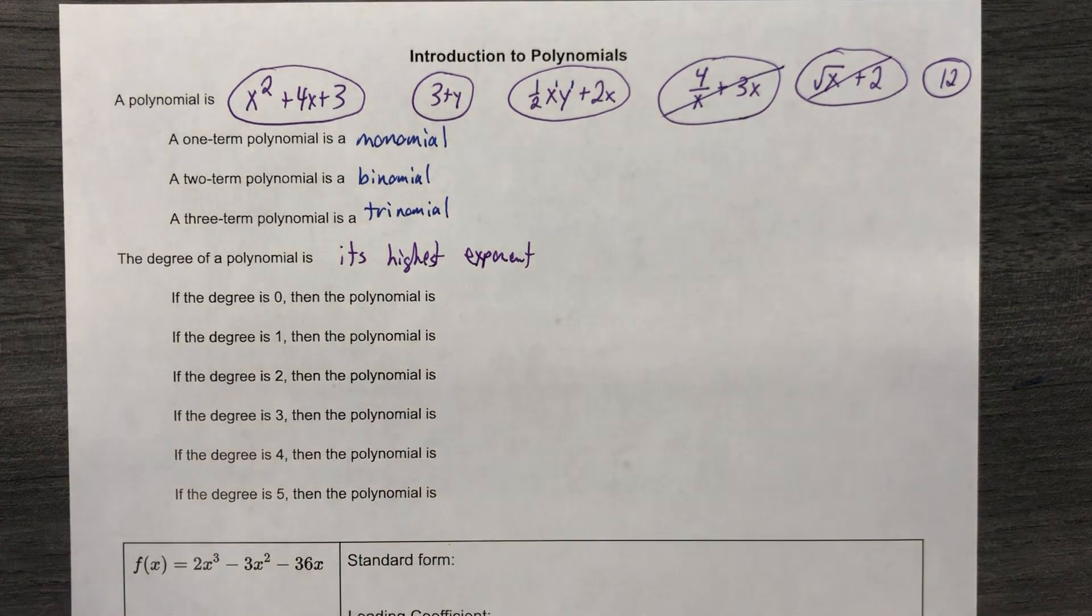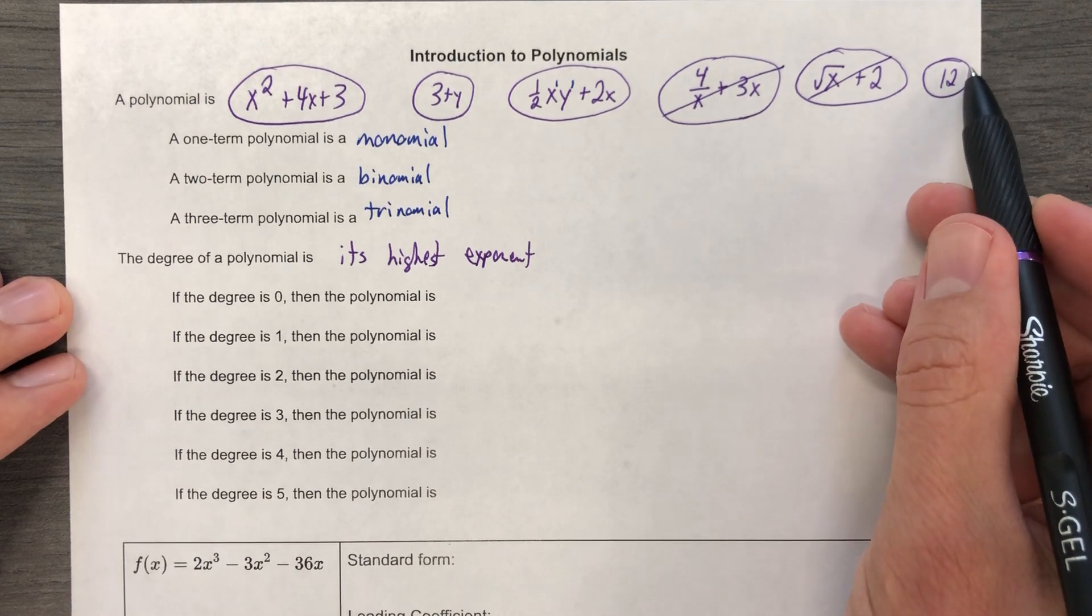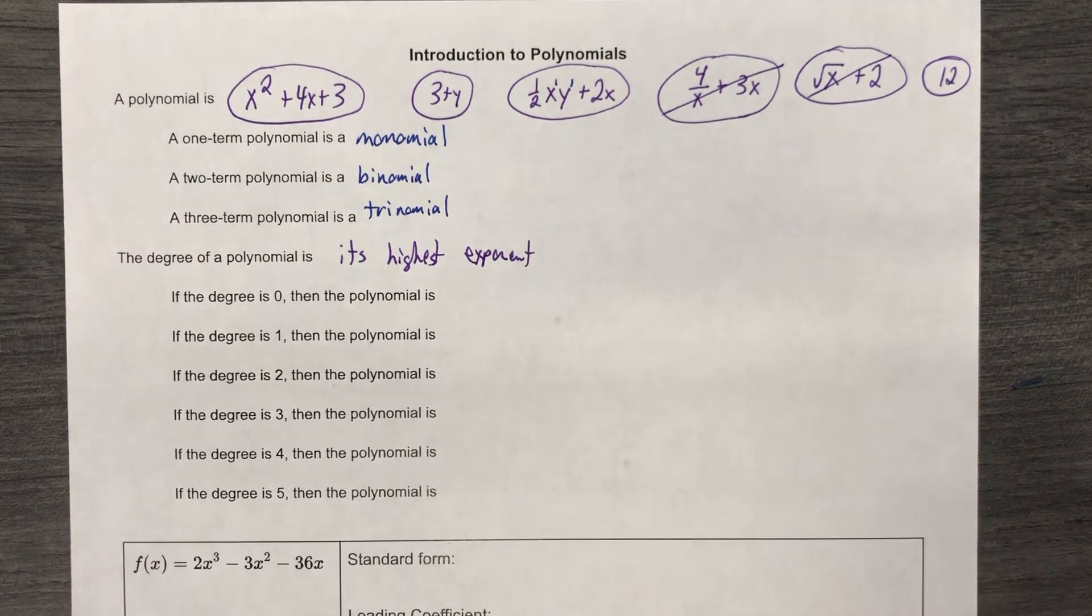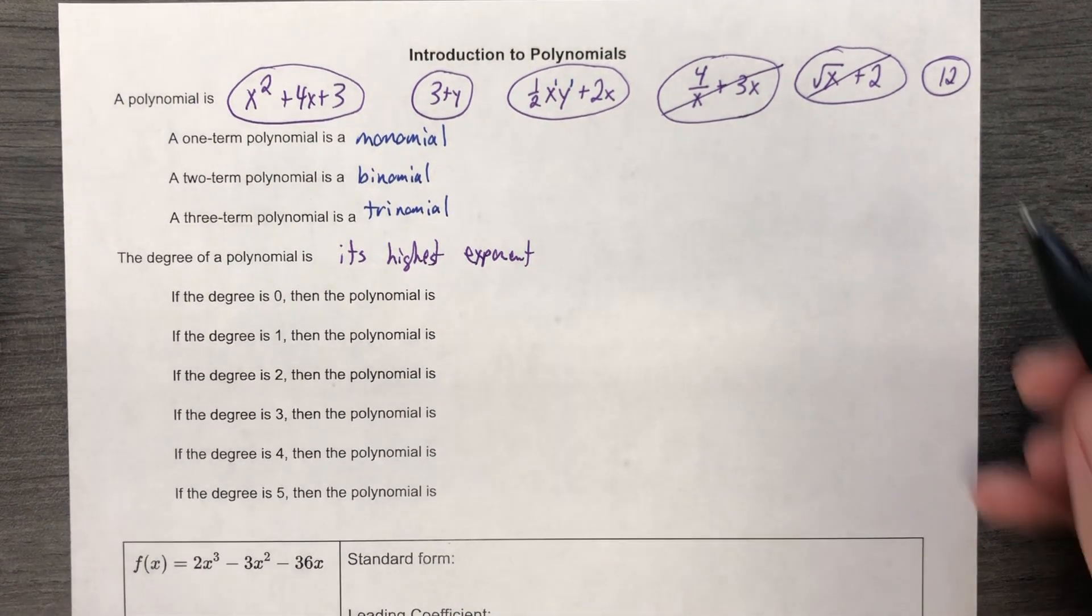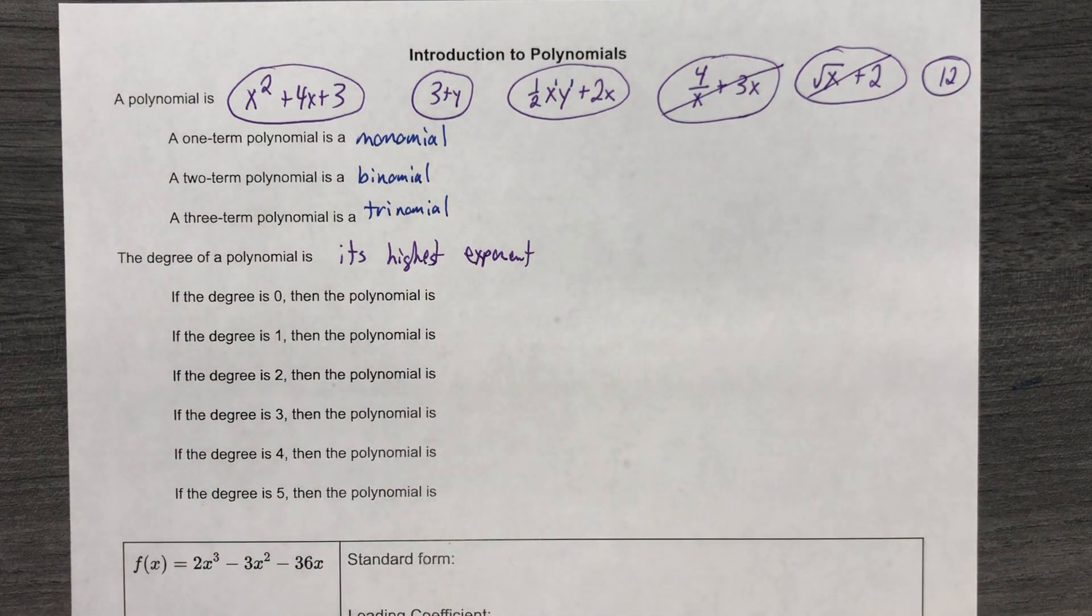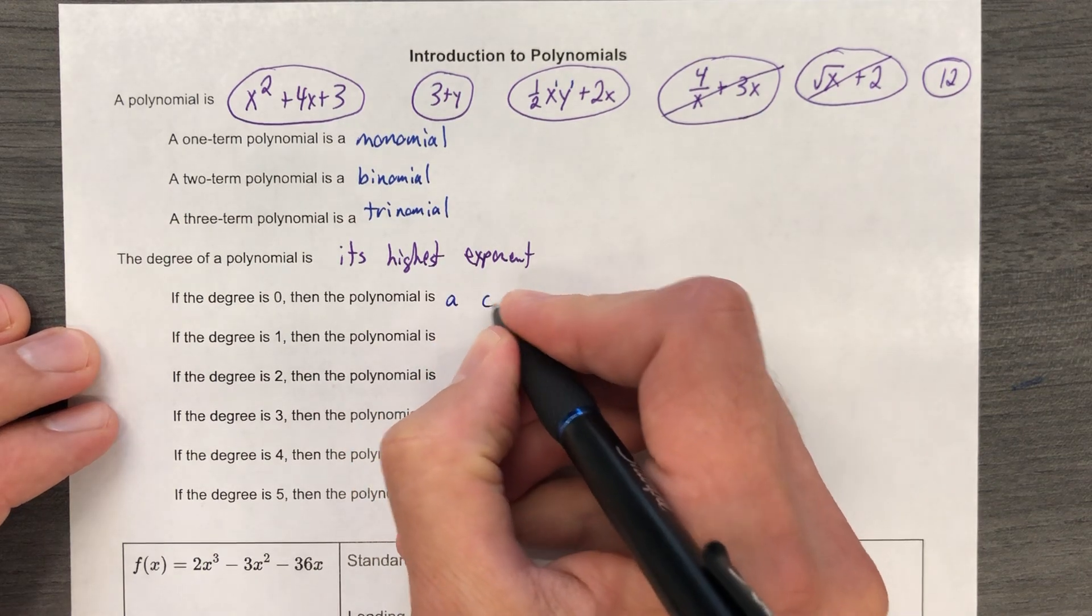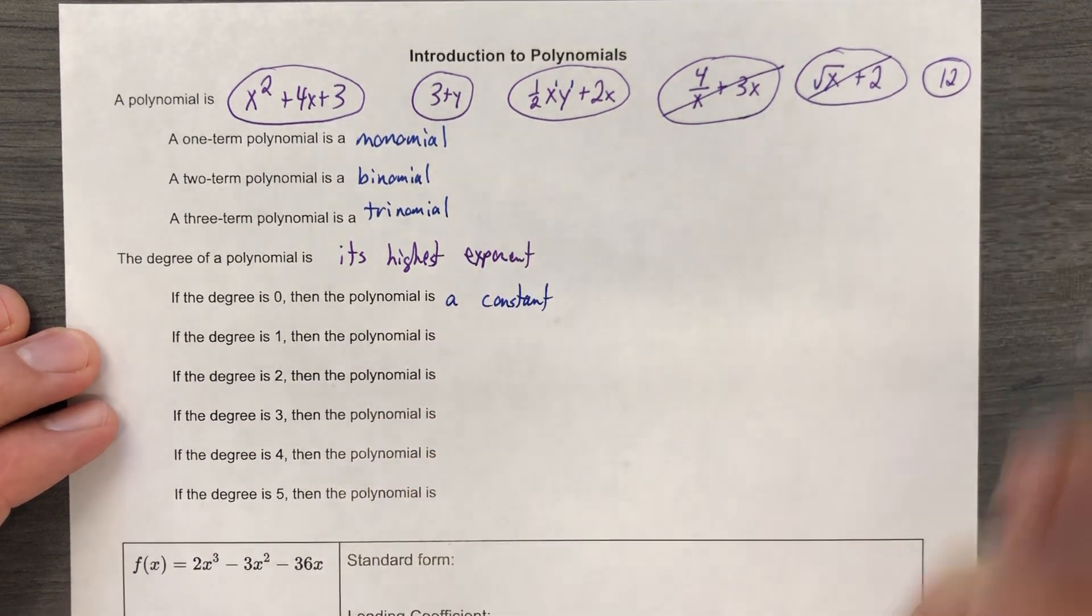So if we have a degree of 0, then the polynomial is, well, it's like this 12. It would be like 12x to the 0. So you would have an exponent that's not a positive integer, but it is still an integer that is not negative for sure. It would be a constant.